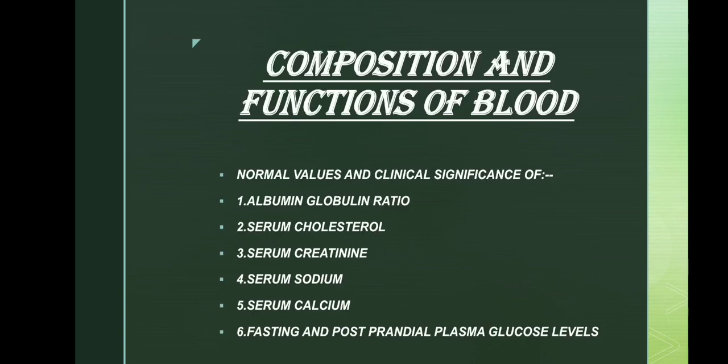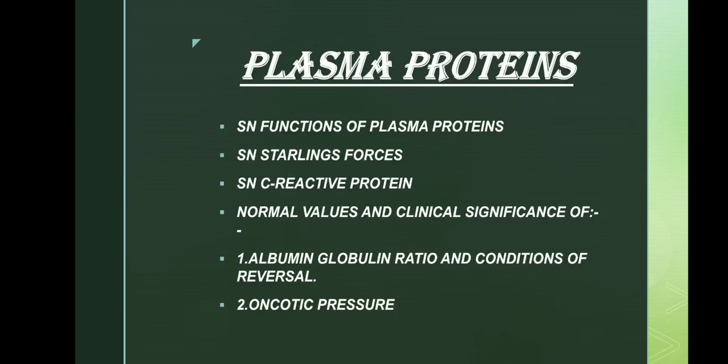Moving on to the blood unit of physiology. The first chapter is composition and functions of blood. From this chapter, normal values and clinical significance of the following are asked: albumin-globulin ratio, serum cholesterol, serum creatinine, serum sodium, serum calcium, and fasting and post-prandial plasma glucose levels.